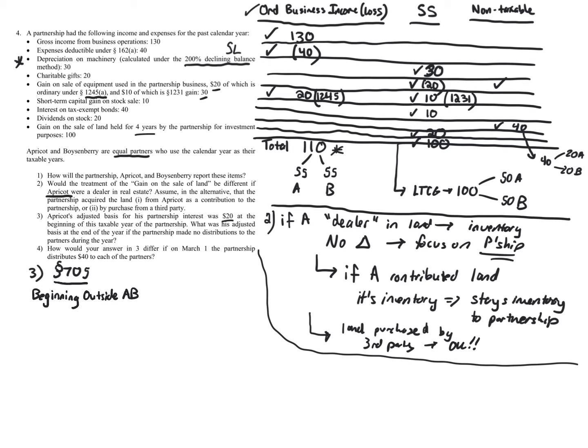During the year, we increase the outside basis for the partner's share of income and gain. We also increase for tax-exempt income. Why? Because if we didn't, your partnership interest would be worth economically more than the basis you tracked, and you'd be taxed on it — creating double taxation. Municipal bond interest, for example, has economic value but no taxable income — so we must increase basis to avoid being taxed on it later.